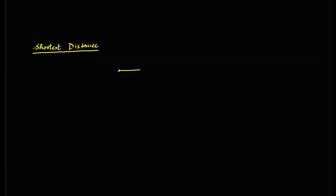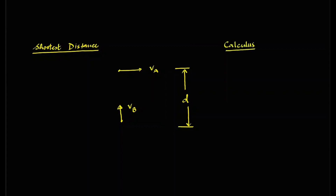A particle is moving along the x-axis with a velocity va, and another particle is moving along the y-axis with a velocity vb. The initial separation between these two particles is d. There are multiple approaches to find the shortest distance during the course of the motion — the first approach is the calculus approach. I would request each one of you to pause this video and solve it using calculus.